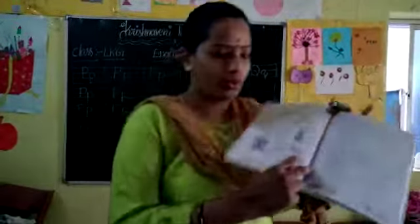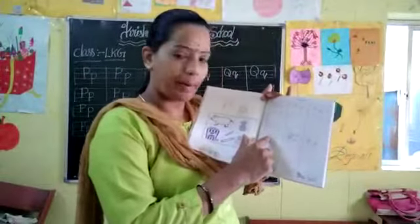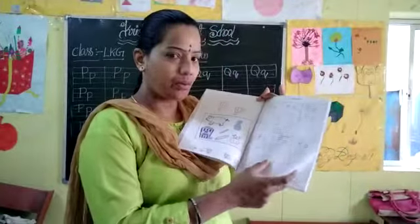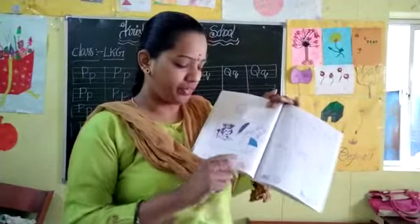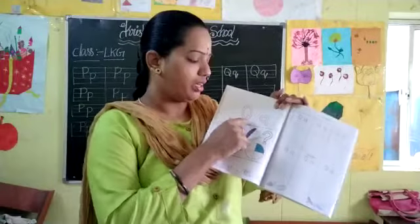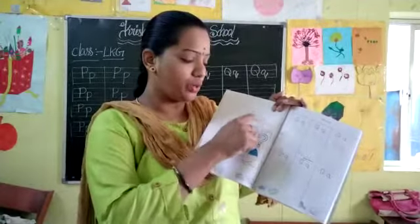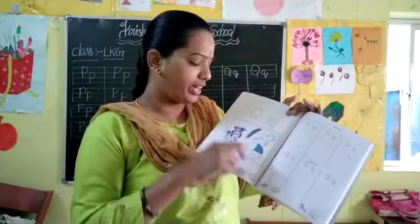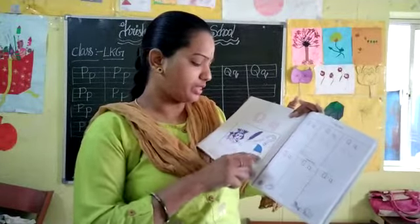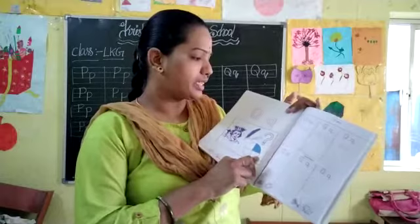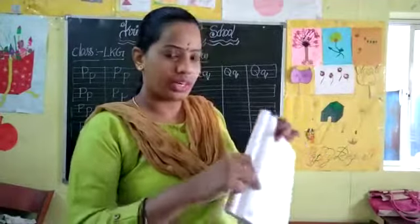Down here you do homework — write capital P and small p. Turn the page, open page number 56. What is there here? This is the letter Q — capital Q, small q. Q for queen, question mark. See here, this is the letter Q. First trace these two Q letters.